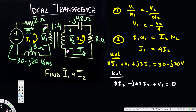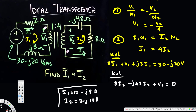We now have three unknowns but with the transformer relations: v1 = −v2/4 and i1 = 4·i2. Substituting and solving, the final answers are i1 = 12 − j8 amperes and i2 = 3 − j12 amperes. That's how we solve this type of ideal transformer problem.